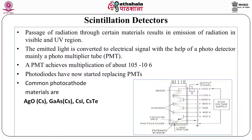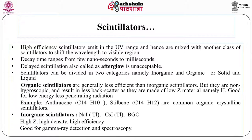A photomultiplier tube (PMT) achieves multiplication of 10⁵ to 10⁶ — compared to 10¹⁰ for Geiger-Müller. Nowadays, photodiodes are replacing photomultiplier tubes. High-efficiency scintillators emit in the UV range and are mixed with another class of scintillators to shift the wavelength to the visible range, since visible light detection is cheaper. Decay time ranges from a few nanoseconds to milliseconds. If scintillation is delayed — called afterglow — that kind of scintillator is unacceptable as a detector.